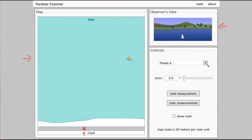And then various different presets that you're going to be asked to use. This adjusts the amount of error in the measurements. And then you can take the measurements. And finally, there's a way to show a ruler for making additional measurements.